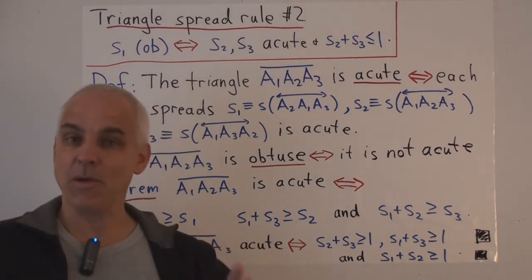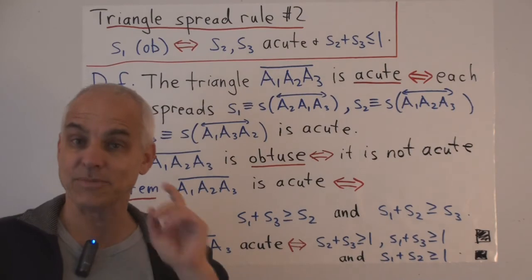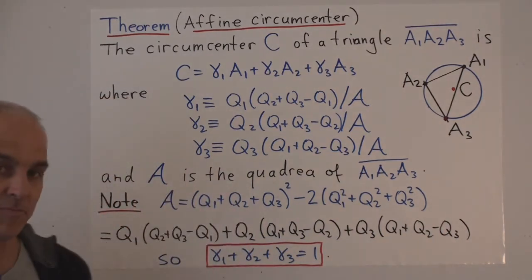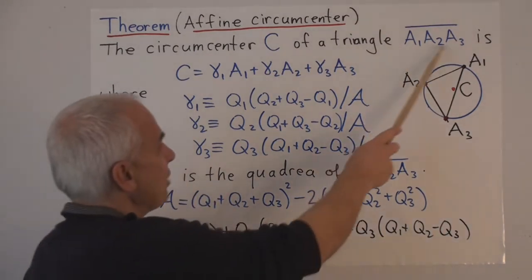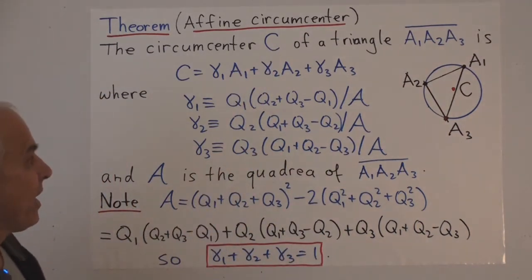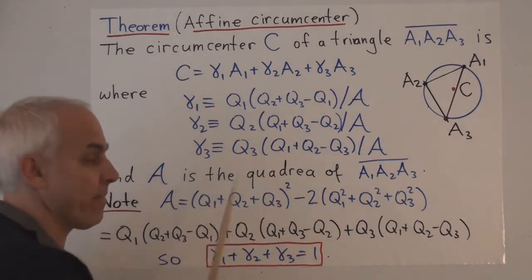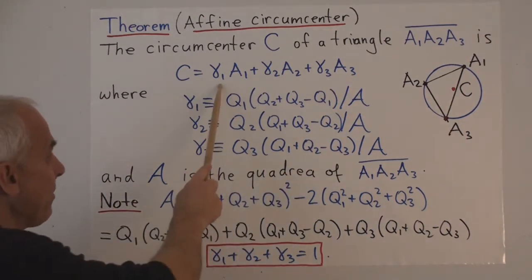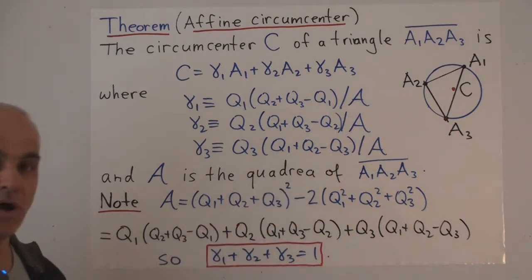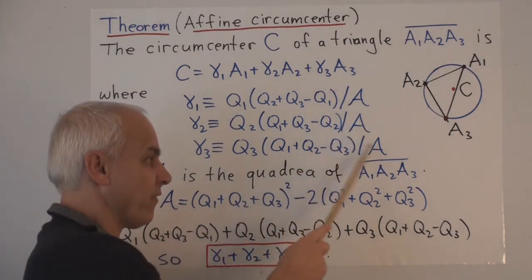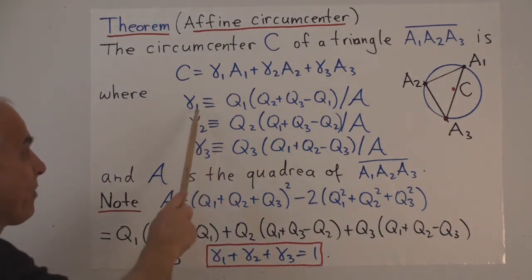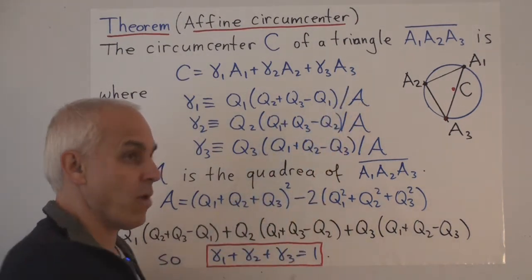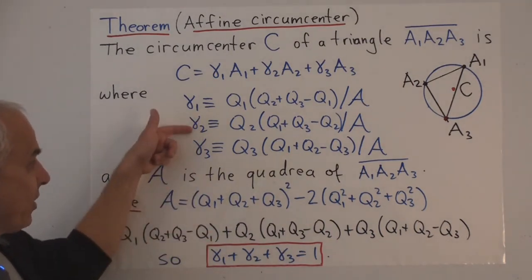Now let's have a look at the connection between acuteness and obtuseness and the circumcenter of the triangle. The Affine Circumcenter Theorem states that if we have a triangle A1, A2, A3, then the circumcenter C can be expressed as the affine combination gamma1 times A1 plus gamma2 times A2 plus gamma3 times A3, where these gammas are given explicitly in terms of the quadrances: gamma1 equals Q1 times (Q2 plus Q3 minus Q1), all divided by the quadria of the triangle, and similarly for gamma2 and gamma3.